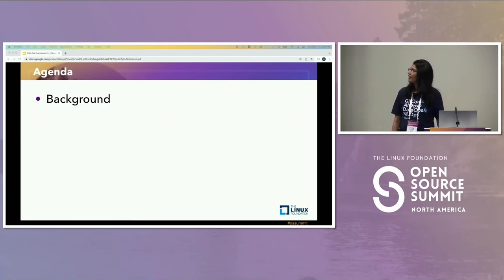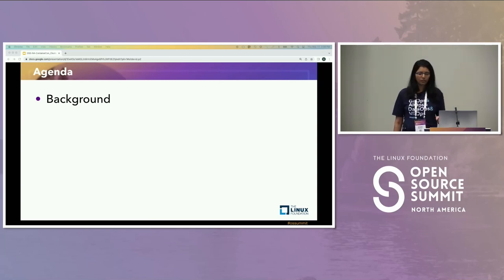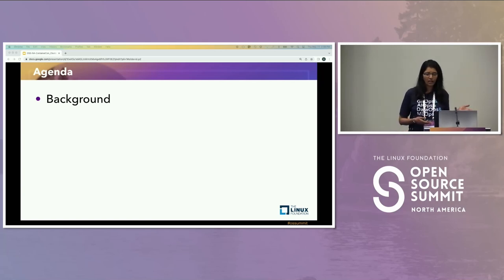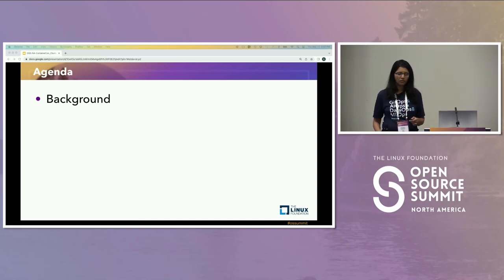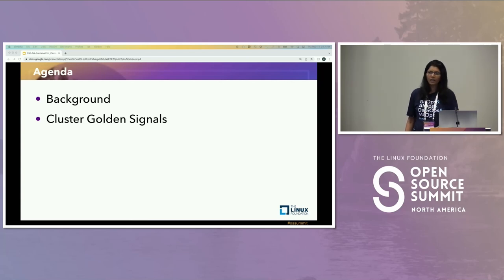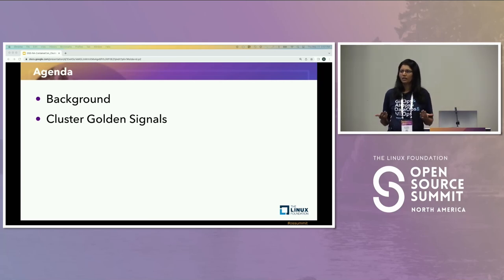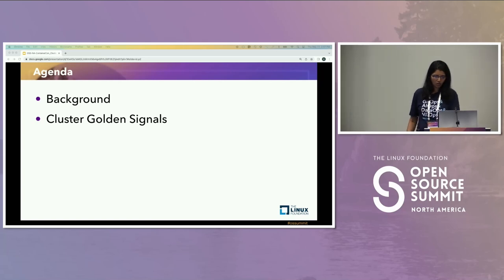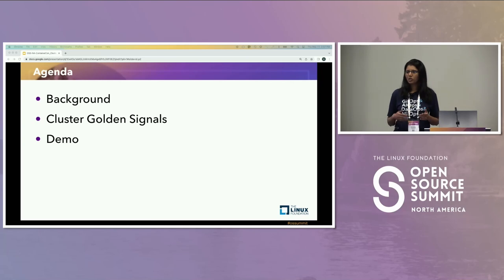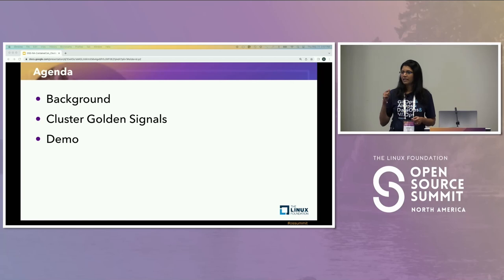Let's look at the agenda for the talk. We're going to give you a background of Intuit's Kubernetes-based platform infrastructure, and we'll introduce you to some of the problems that platform engineers like us deal with while building, managing, and observing our Kubernetes-based infrastructure. We'll then introduce you to the concept of cluster golden signals, why we did it, and how we did it. We'll follow that up with a demo, which highlights the power of using cluster golden signals in determining and lowering your MTTD and MTTR during a service incident.